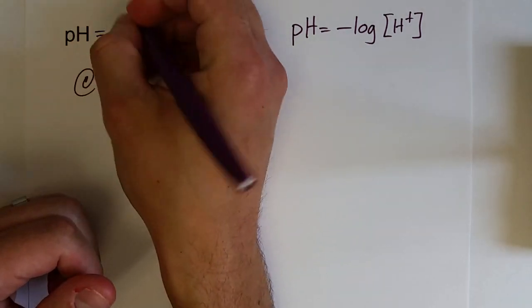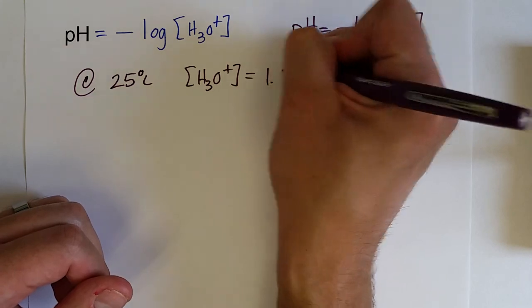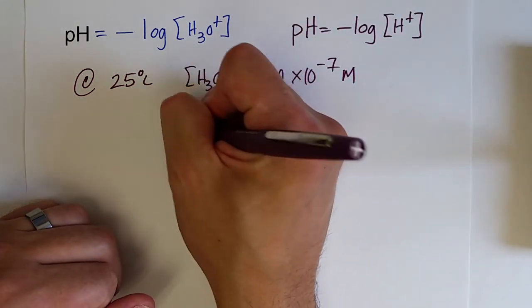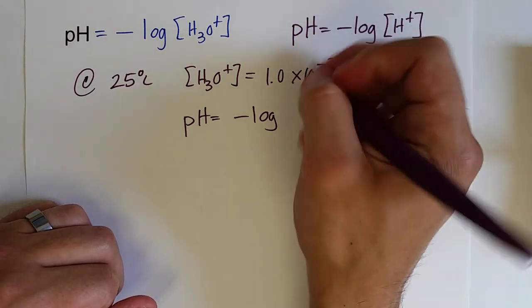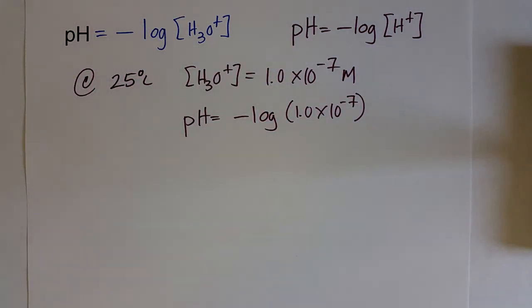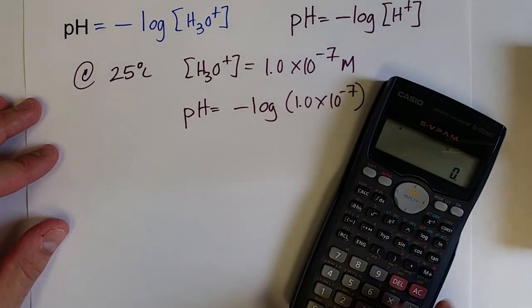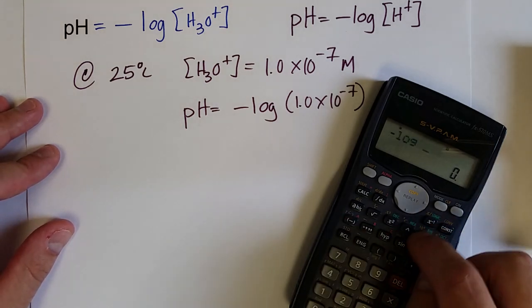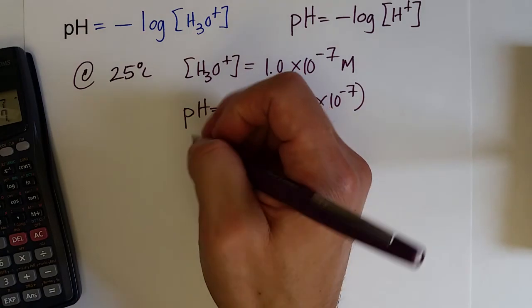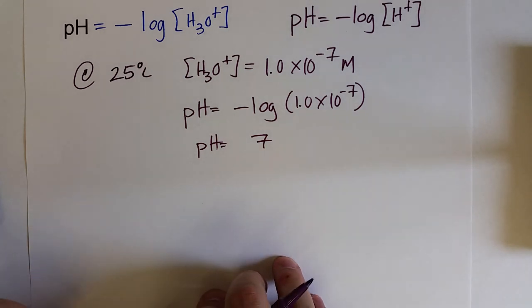At room temperature, which is about 25 degrees Celsius, the concentration of hydronium in water is equal to 1.0 times 10 to the negative 7th. So if you wanted to calculate the pH of water, you would take the negative log of 1.0×10⁻⁷. Breaking out the calculator: the negative log of 1.0×10⁻⁷ equals 7. And so that is what defines a neutral solution, or the pH of a neutral solution, at room temperature.